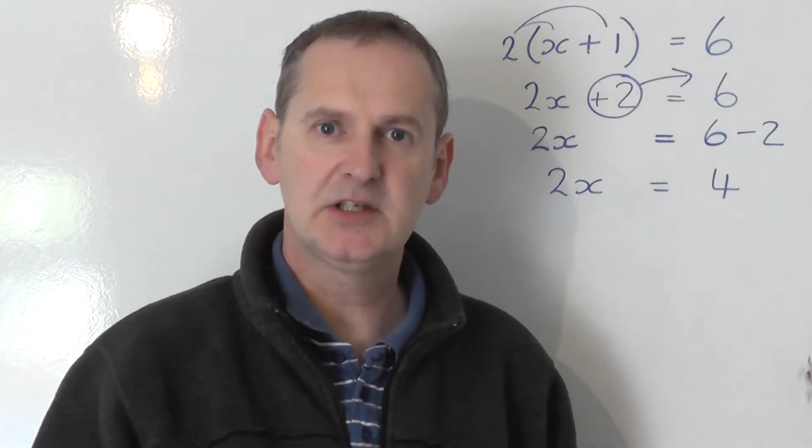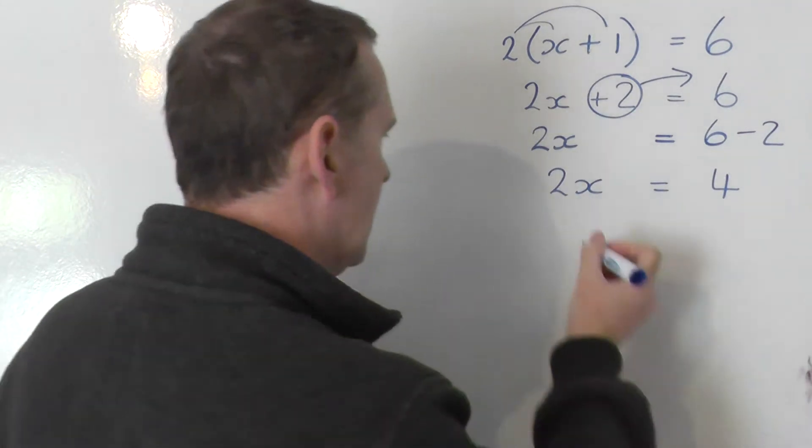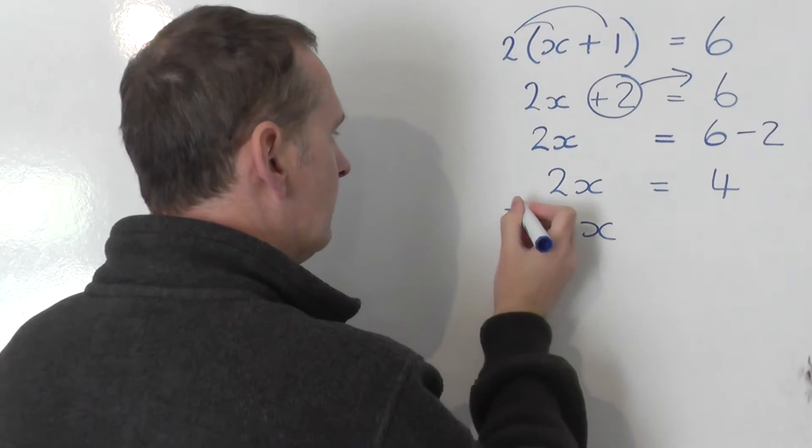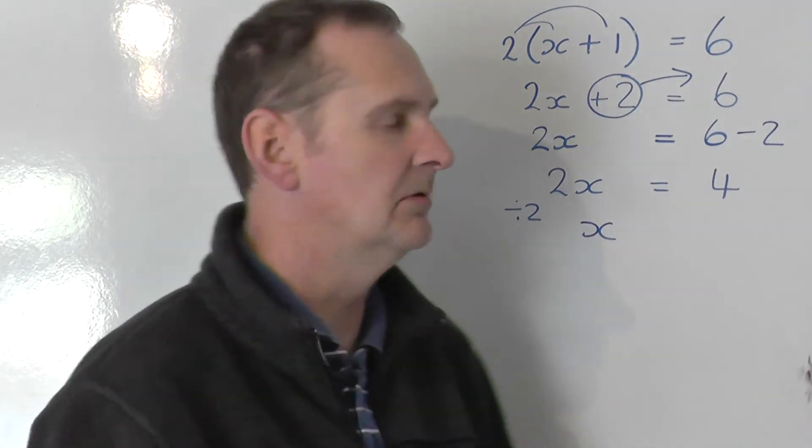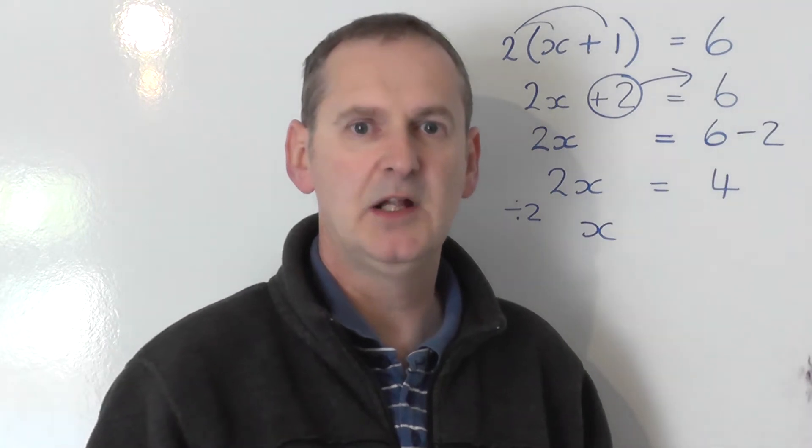But I don't want to know what 2x is, 2x is equal to 4, I want to know what x is. So I change the 2x to an x simply by dividing the left by 2. If I divide the left by 2, I need to divide the right by 2 as well to keep it balanced.